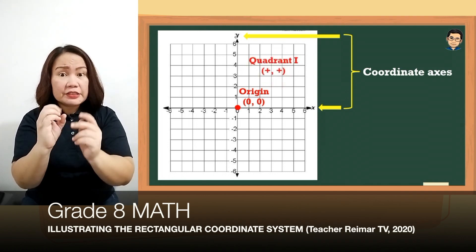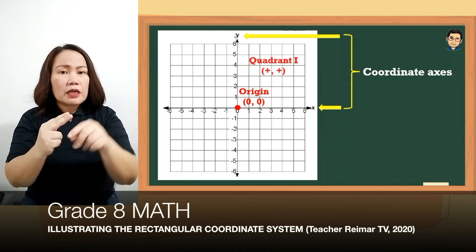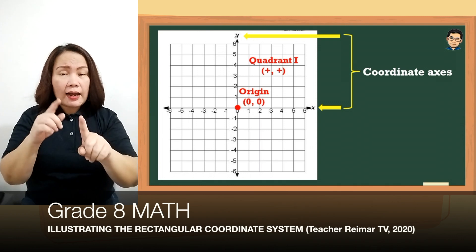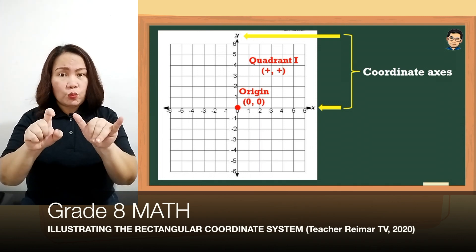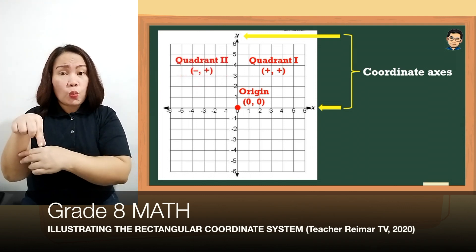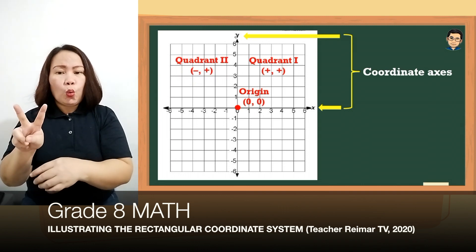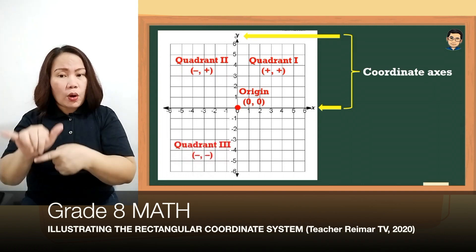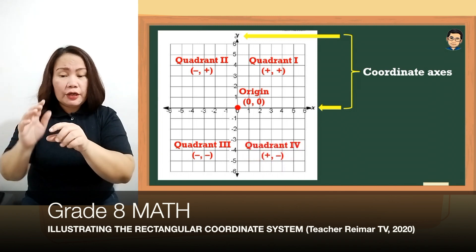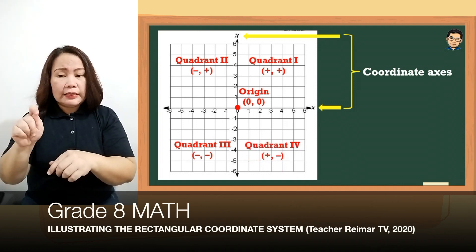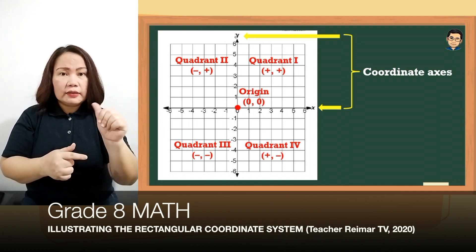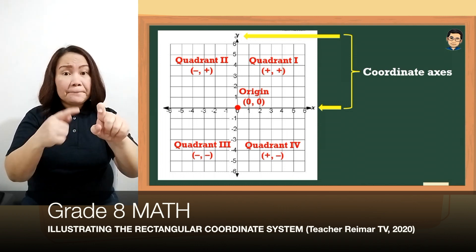Yung mga quadrants naman natin, yung four regions: yung quadrant 1, yung sign ng mga coordinates x and y ay parehong positive. Yung quadrant 2 naman, yung x ay negative and then yung y coordinate ay positive. On the third quadrant, yung mga coordinates ay parehong negative. And then on the fourth quadrant, yung x-coordinate, yung abscissa, is positive, and then yung y-coordinate is negative. Yan lang po yung mga dapat ninyong tandaan sa Cartesian coordinate plane.